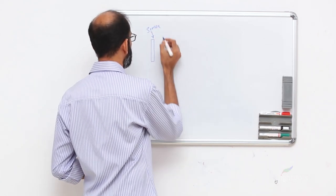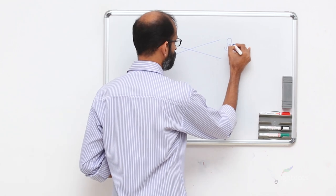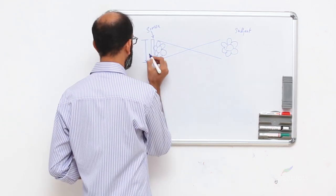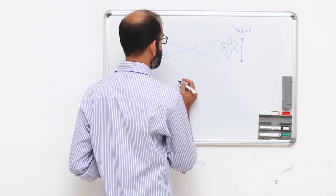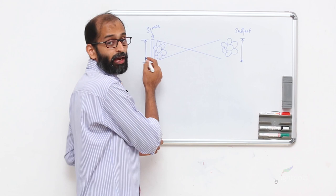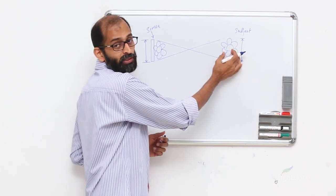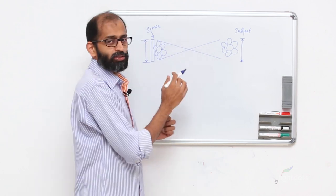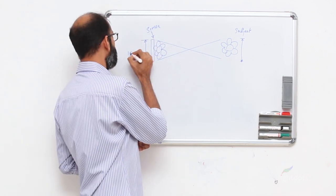Now if you observe this diagram, you have the camera sensor and you have a subject which is a small flower which you are trying to shoot. Imagine your sensor size is 10 millimeter.